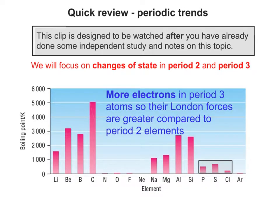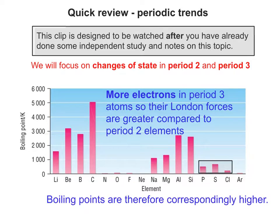Focusing on phosphorus, sulphur and chlorine: there are more electrons in period 3 elements, so their London forces are greater and stronger, meaning their boiling points are a little bit higher. It's also useful to look at phosphorus, sulphur and chlorine in another way — why are they slightly different to each other?